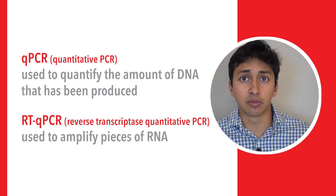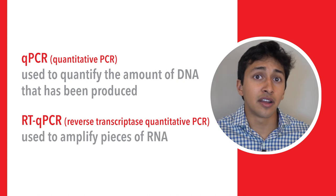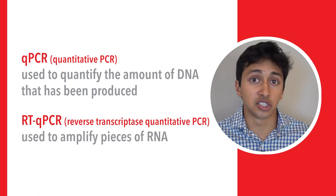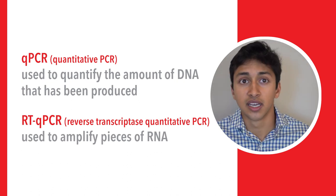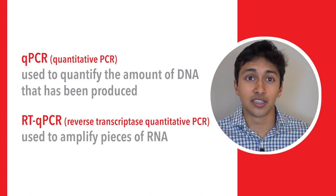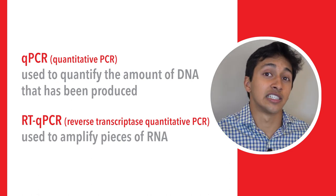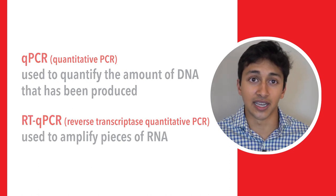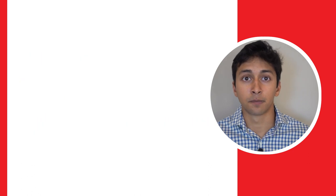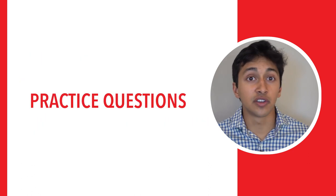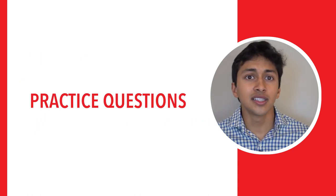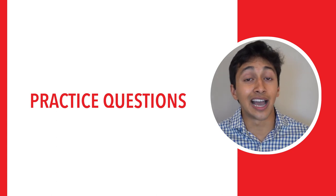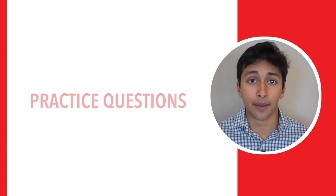Once the PCR is completed, the large amount of DNA that's made can be subjected to other experiments, such as Southern blot. To review what a Southern blot is, you can check out our last Experiment Explained video discussing Western blots and related techniques. Now that you have a good understanding of PCR, let's take a look at some real-world examples of applications you might actually see on the MCAT.